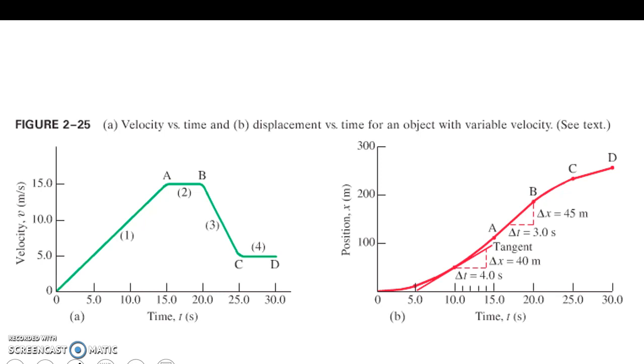Now, let's look at variable velocity. If our velocity varies, so here's a velocity time graph, and at one time we have a constant velocity, and then we have no velocity. Then we have a negative velocity, and then we have no velocity. How does that correlate, this change in velocity, how does that correlate to a position time graph?